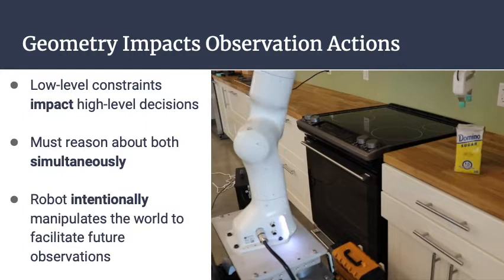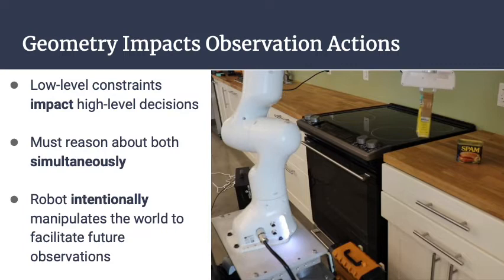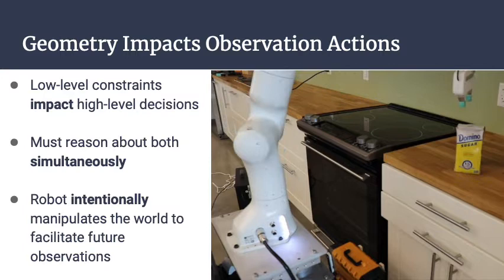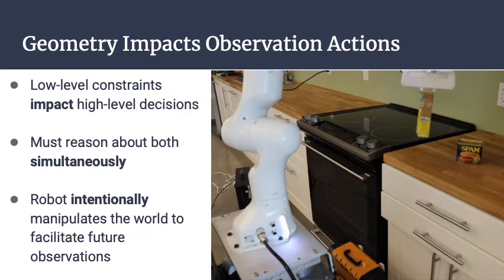The key challenge in these domains is that low-level geometric constraints can actually impact what you do at a high level. In this example, the spam starts off behind the movable sugar box, and the robot has to intentionally pick up the sugar box to potentially detect whether the spam is behind it. To do this, the robot has to reason about both the high level and low level simultaneously, and intentionally manipulate the world to facilitate future observations.